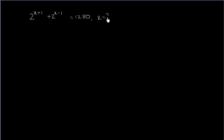Let us see here. If you observe this, 2 to the power x plus 1 is in the form of a to the power m plus n. So you can write it as a to the power m into a to the power n. Similarly, this one is in the form of a to the power m minus n, so you can write it as a to the power m by a to the power n.